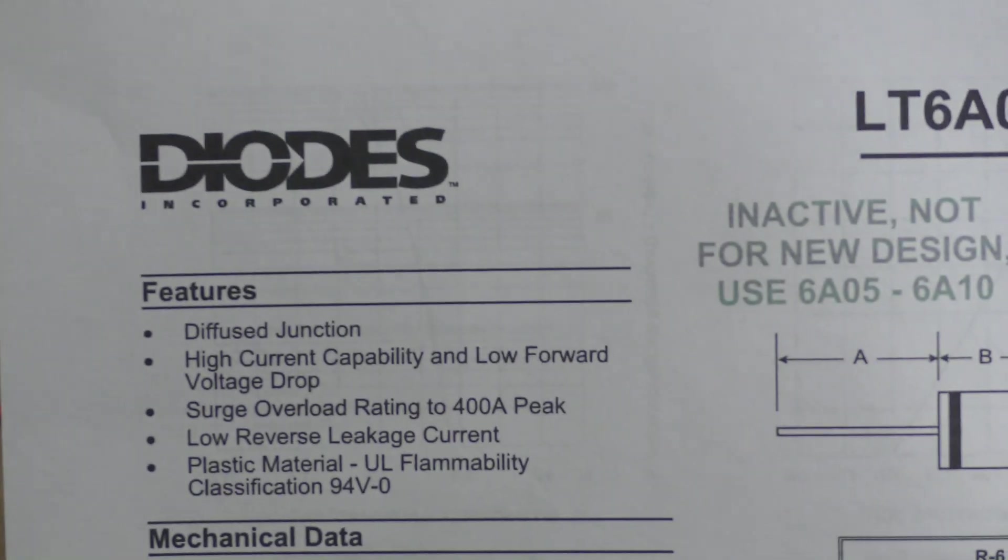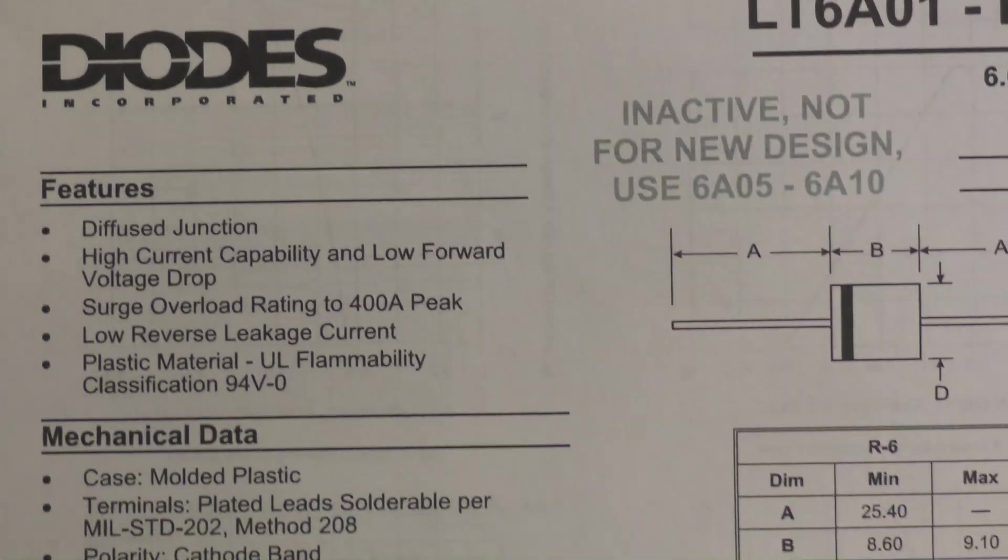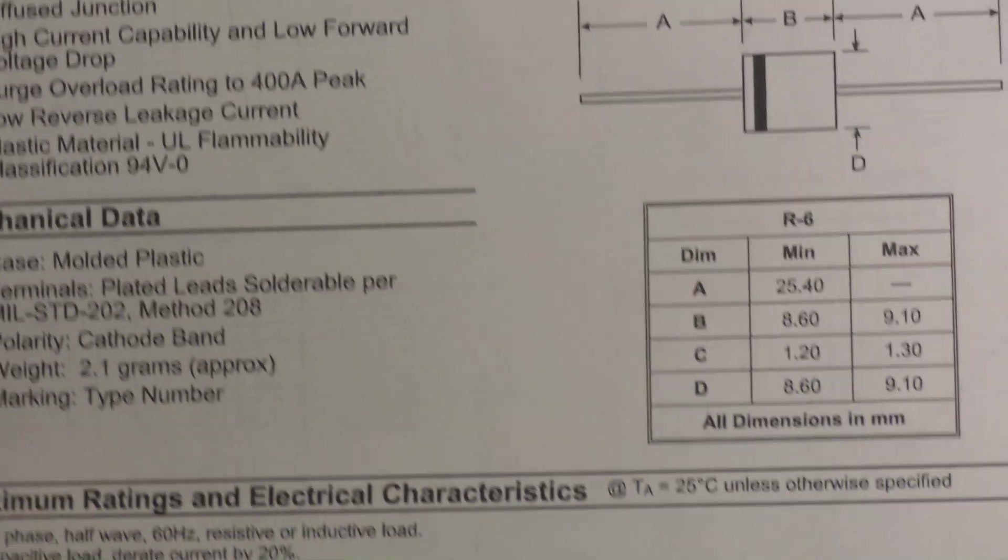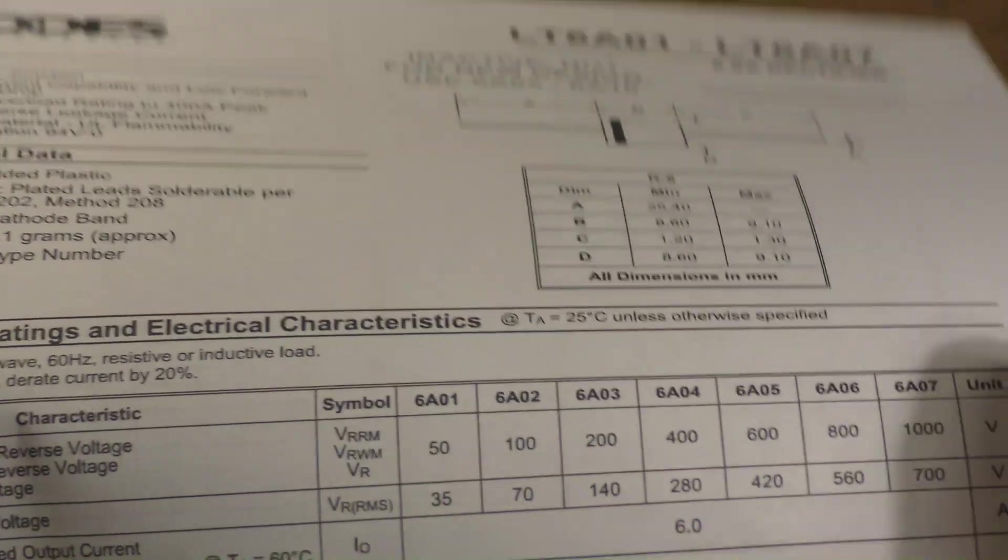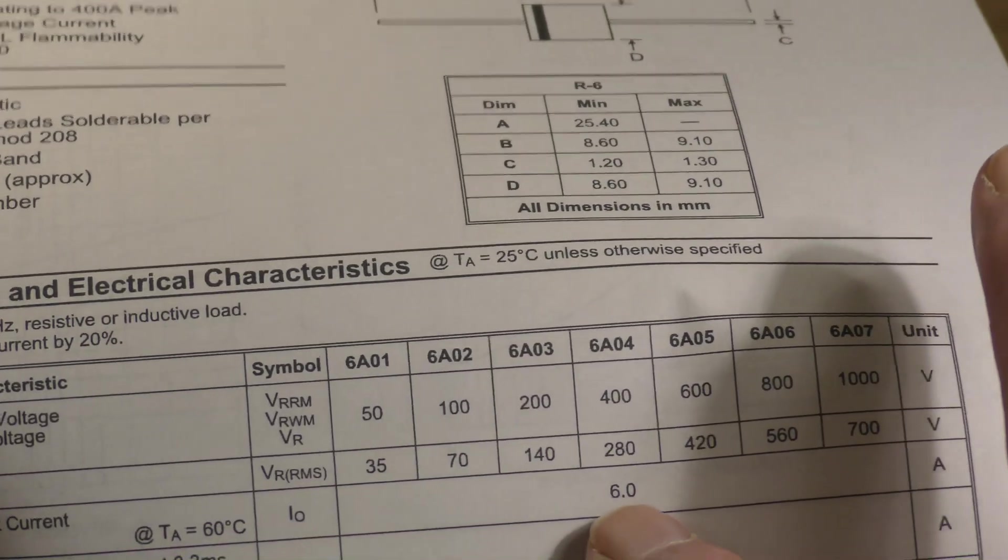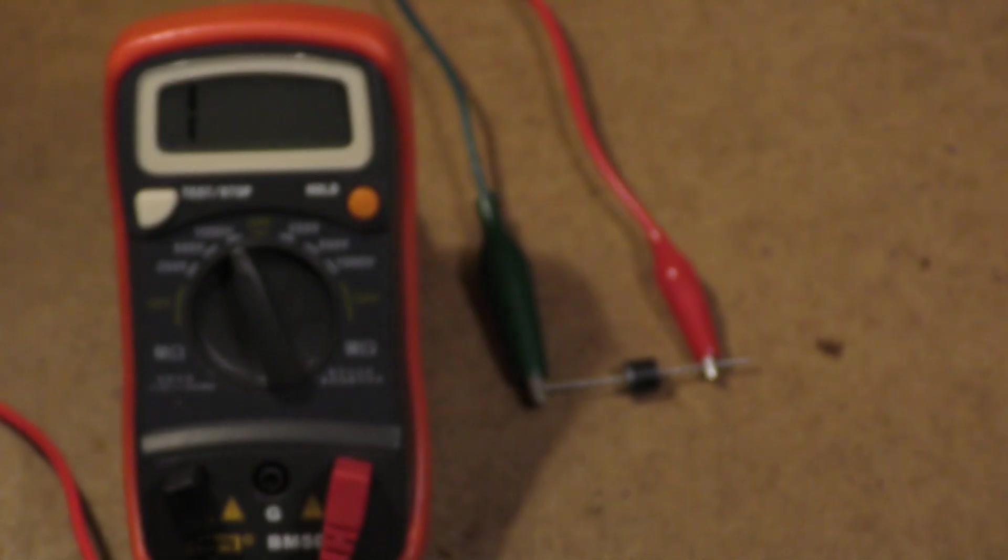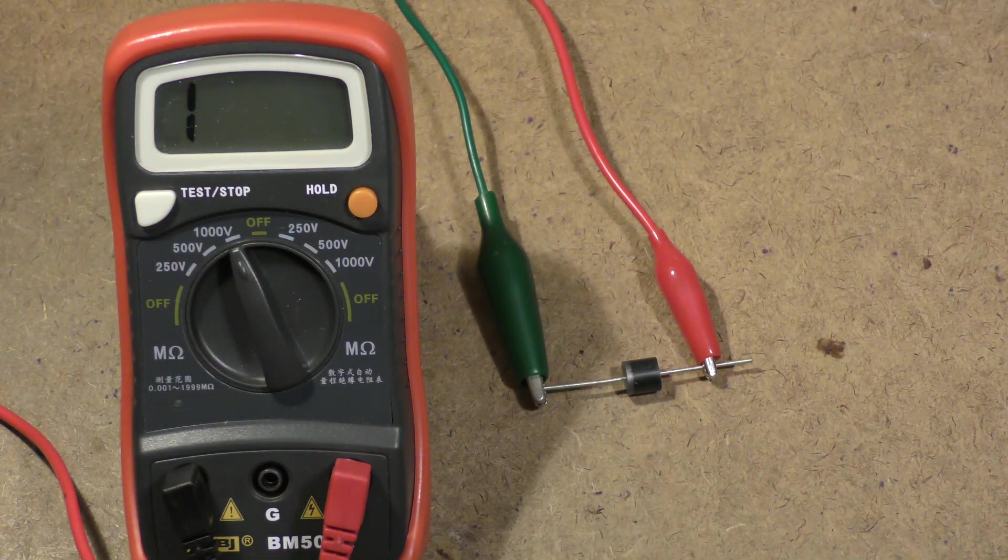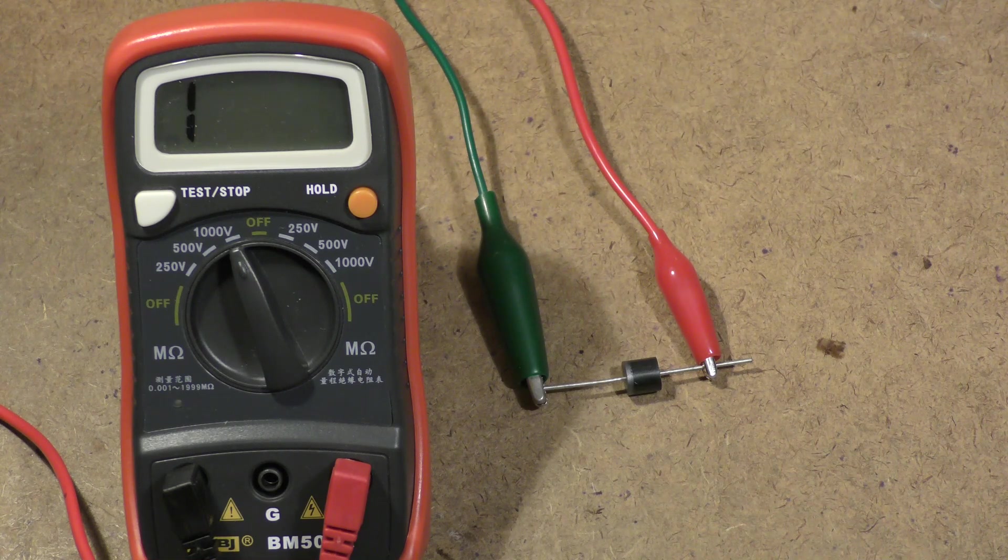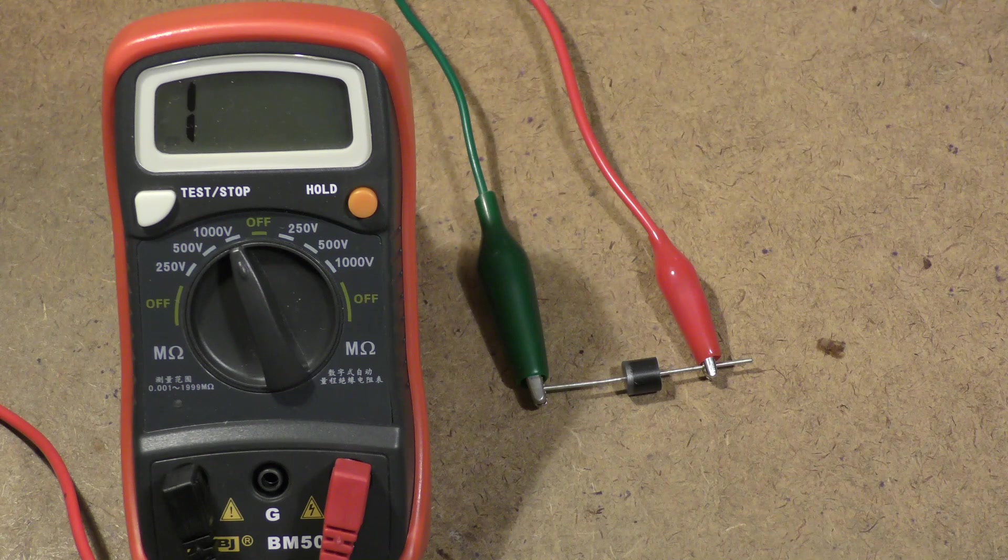It's done that way because this is a very high current diode. It's intended to carry six amps. It's a much more robust diode in the forward direction, but once again nothing in life is free.